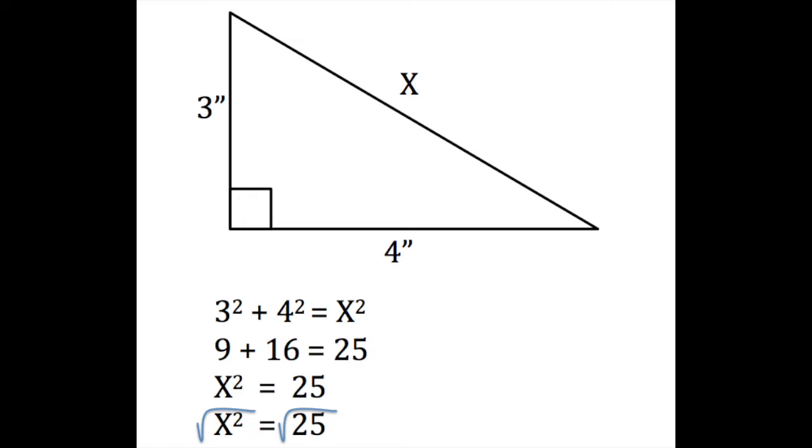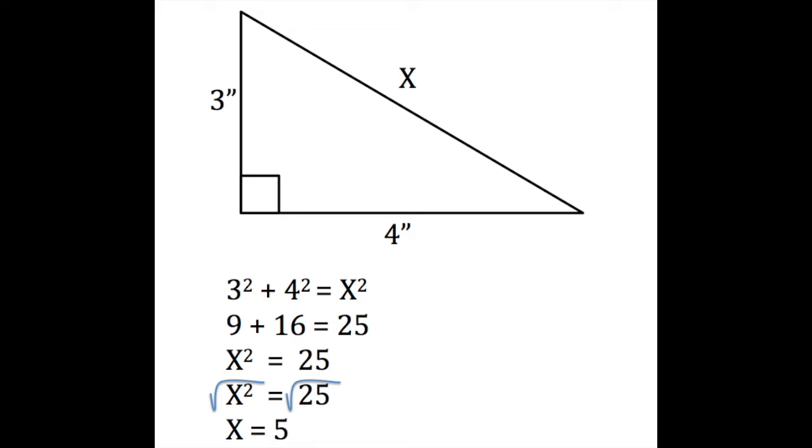But we want to know what the answer to x is. So we take the square root of x² and the square root of 25 and we get x = 5.